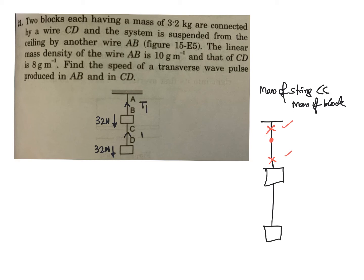The upper string has tension T1, the lower string has tension T2. In the upper string, the speed of wave is equal to root over of 64 by mu.